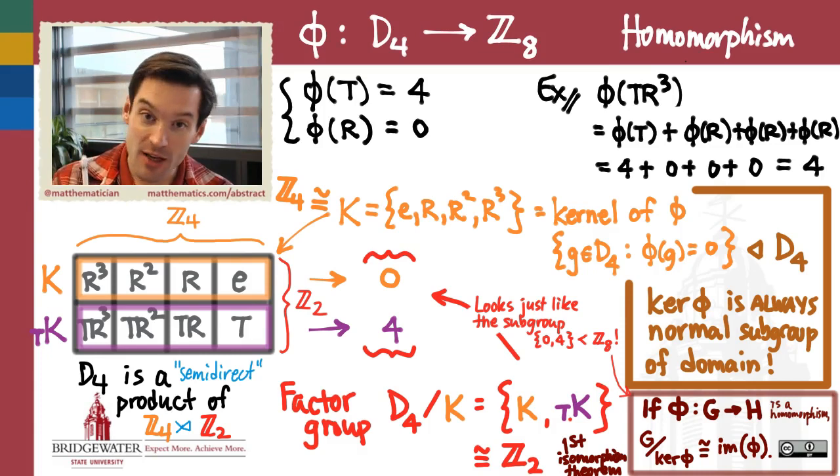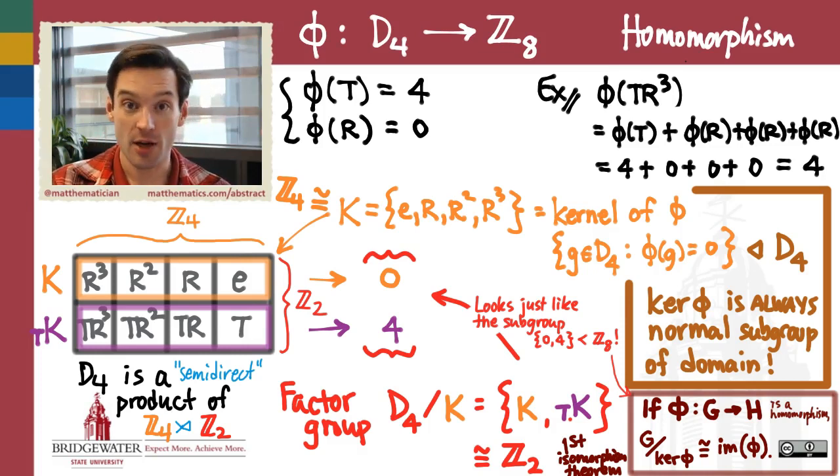Because from a single homomorphism out of a group, we get this bounty of information about normal subgroups and about factor groups associated just to that homomorphism that tell me something about the groups on which that homomorphism is acting. I can't wait to put those videos together for you in our next chapter.